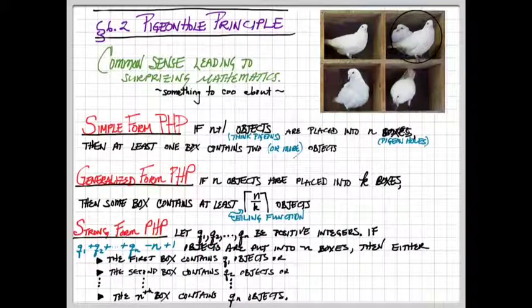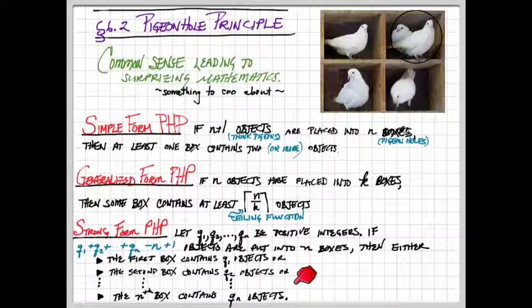When this happens, the result is that either the first box contains q1 objects, or the second box contains q2 objects, or the third box contains q3 objects, all the way down to, or the nth box contains qn objects.